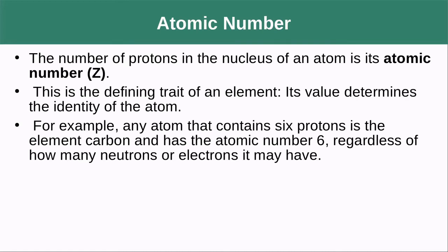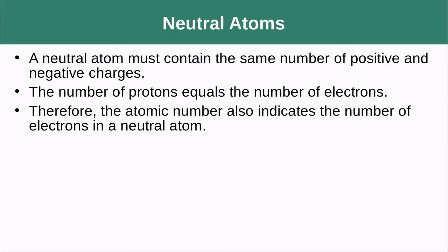The atomic number is the number of protons in the nucleus of an atom — this is the defining trait of an element. All atoms with six protons are always carbon; all atoms with eight protons are always oxygen. For neutral atoms, we need equal numbers of positive and negative charges, so if you're dealing with a neutral atom, you know the number of electrons equals the number of protons.